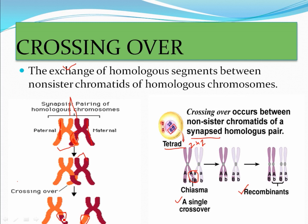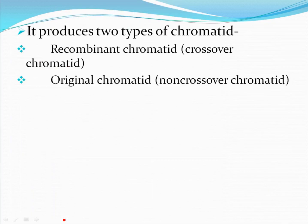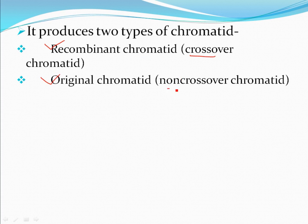The chromatids not participating in crossing over will form parental gametes — same as the parent. Those chromatids participating in crossing over form different products; they are called non-parental products or recombinant products. After crossing over, two types of products are formed. The first is the recombinant chromatid, also called crossover chromatid because they participated in crossing over. The second is the original chromatid — same as the parent — also called non-crossover chromatid because they did not participate.